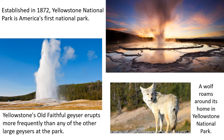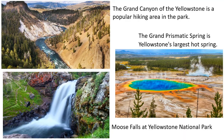You see a wolf roaming around its home in Yellowstone National Park. The Grand Canyon of Yellowstone is a popular hiking area in this park. The Grand Prismatic Spring is Yellowstone's largest hot spring — it forms a prism from the way the light hits it, like a rainbow. Yellowstone also has its waterfalls; this is Moose Falls. I wonder what animal roams around this area.